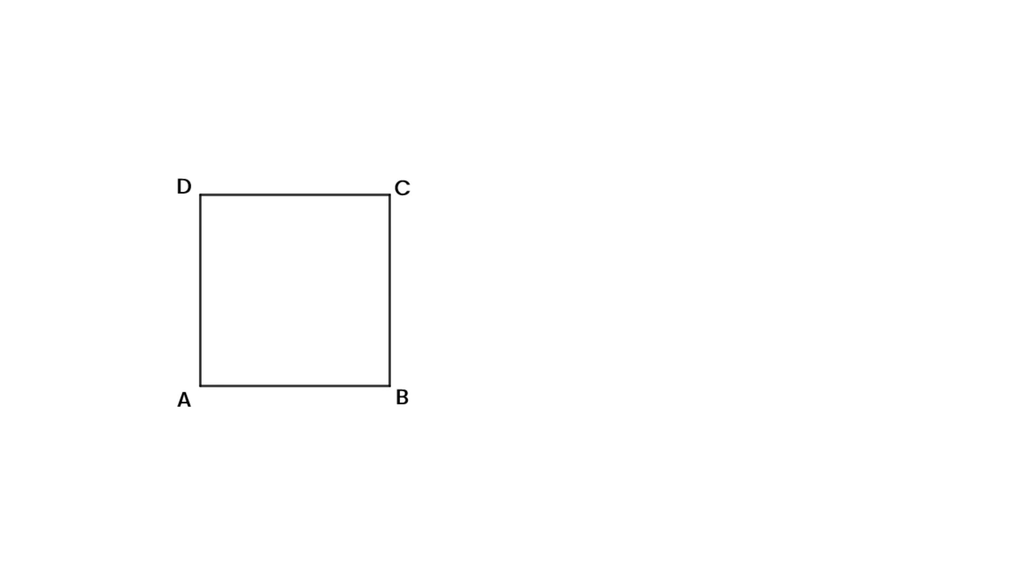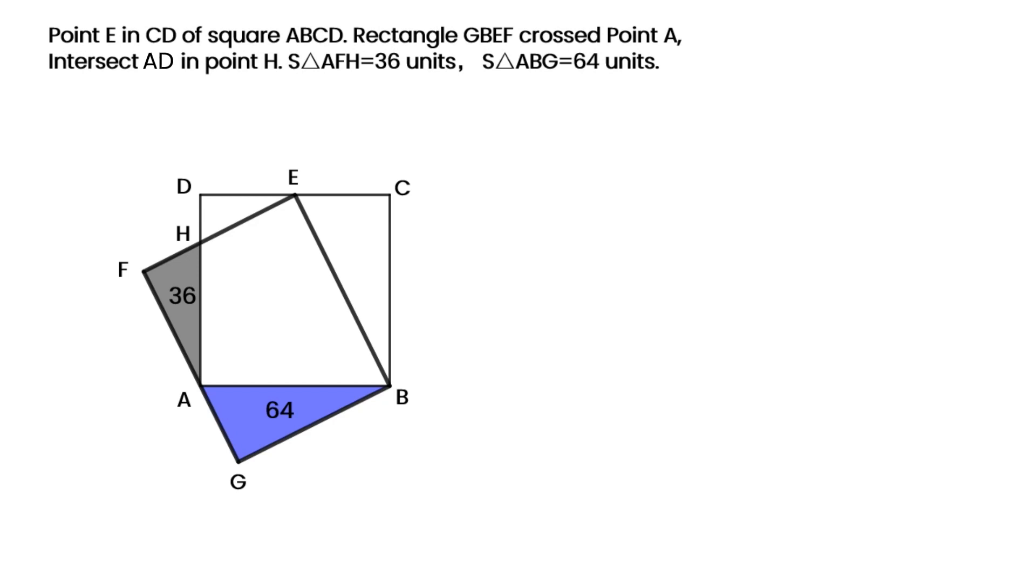Point E in segment CD of square ABCD. Rectangle GBEF crosses square with point A and intersects segment CD in point H. If the area of triangle AFH is 36 units and triangle ABG is 64 units, what's the area of square ABCD?